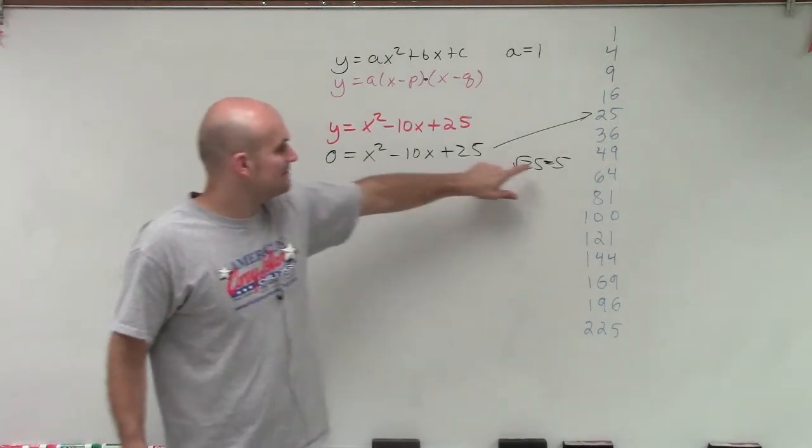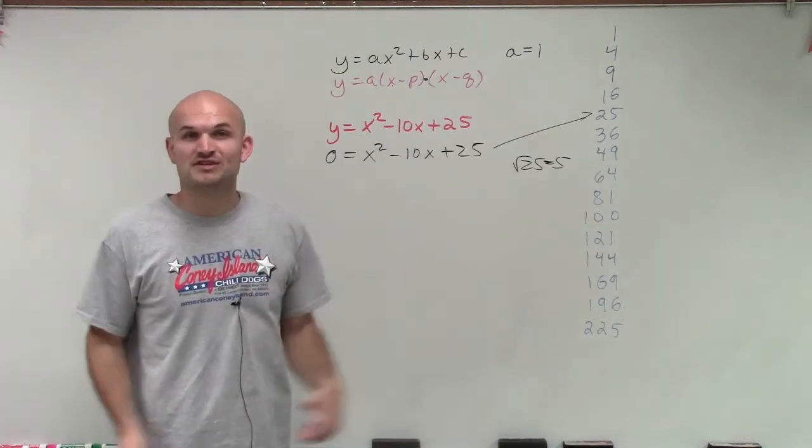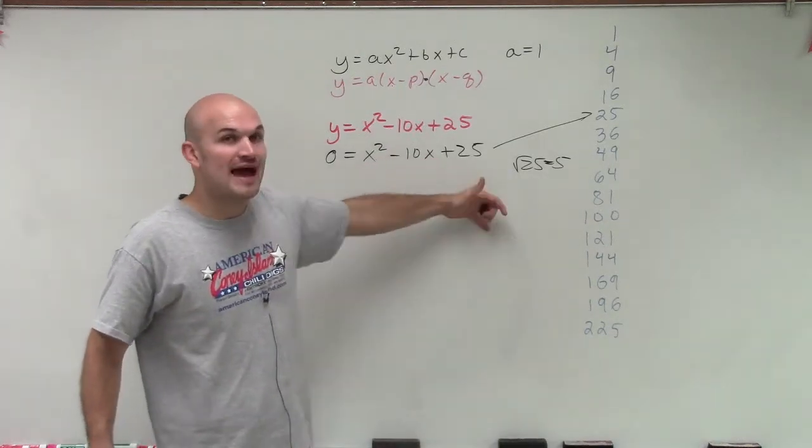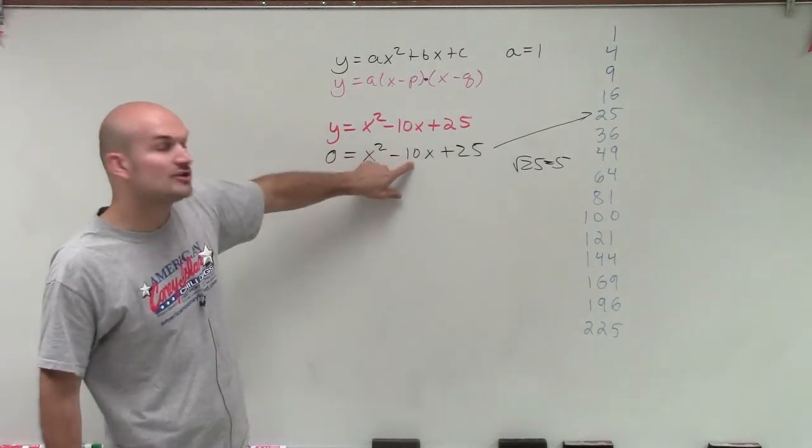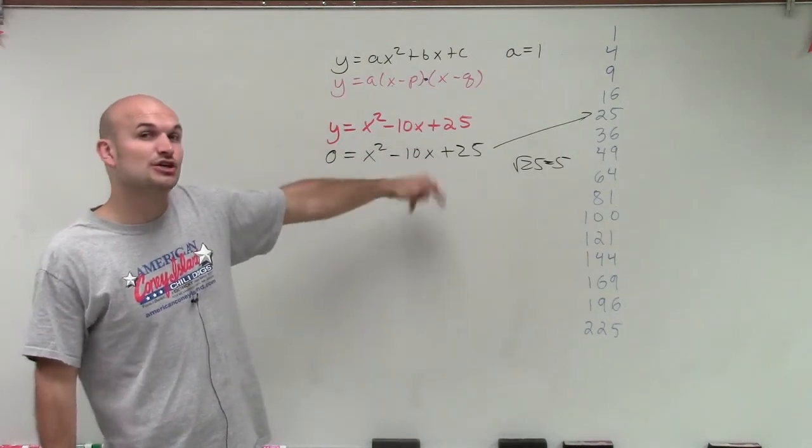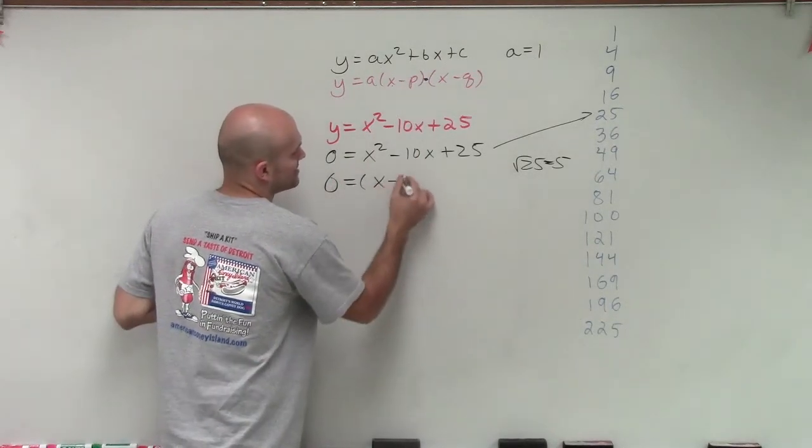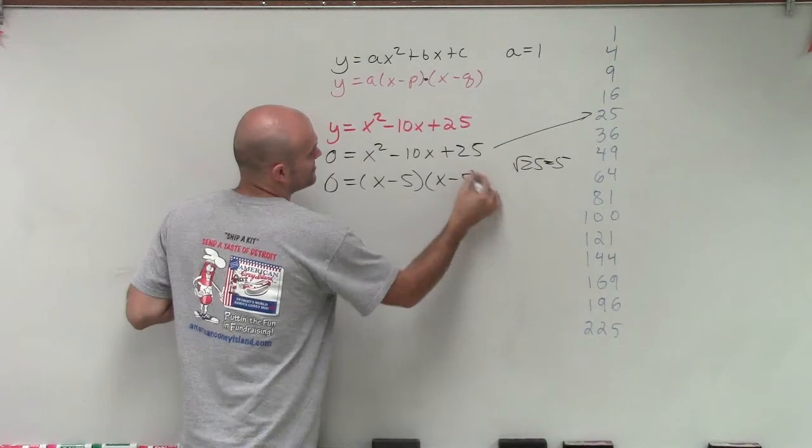since this is double, I now have a perfect square. So once I have a perfect square, to write my factors, remember, if my middle term is negative, that means my two factors p and q also have to be negative. So to quickly write this out, I can write x minus 5 times x minus 5.